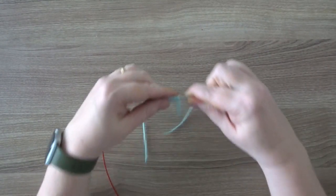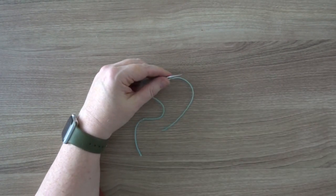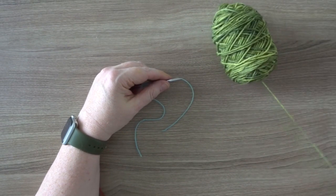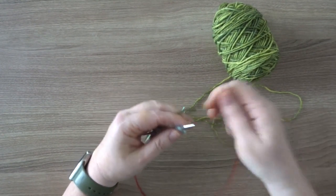Now that you have all your provisional cast on stitches casted on, you are going to pick one of your colors. I'm going to go for this green. And you knit all the stitches on your needle.